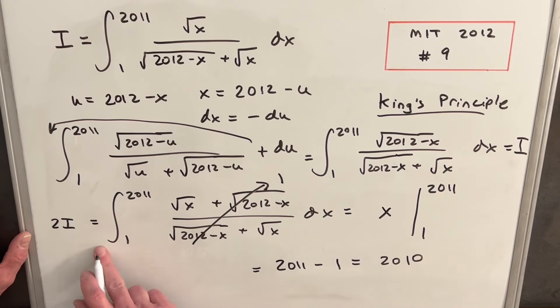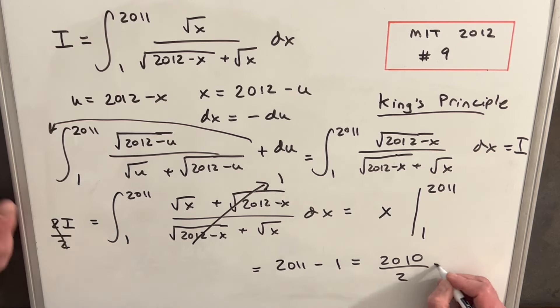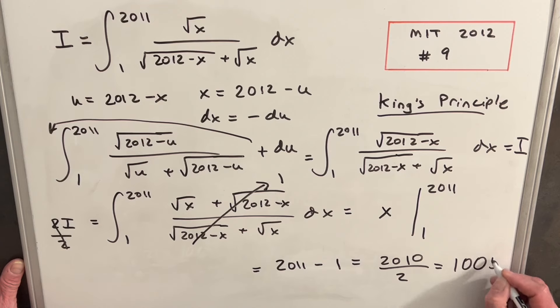We're not quite done though, because we have two copies of the integral, so we'll just divide by two, divide by two, and we get our final answer of 1005.